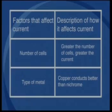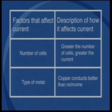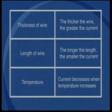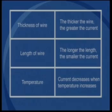Let's now summarize the factors that affect the electric current through a conductor. The greater the number of cells, the greater the current through the conductor. Copper will conduct better than nichrome wire. The thicker the conductor or wire, the greater the current. The longer the length of the conductor, the smaller the current. And when temperature increases, the current will decrease.